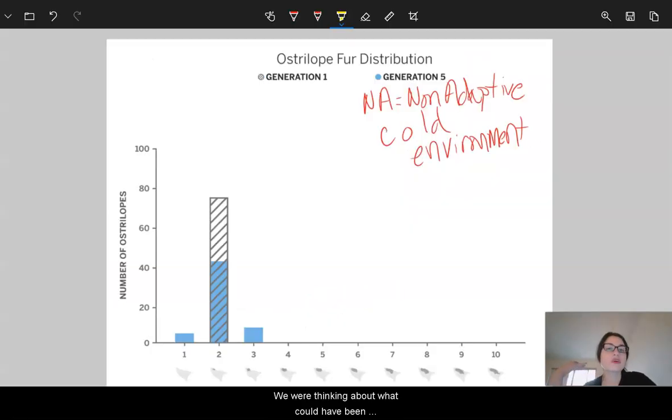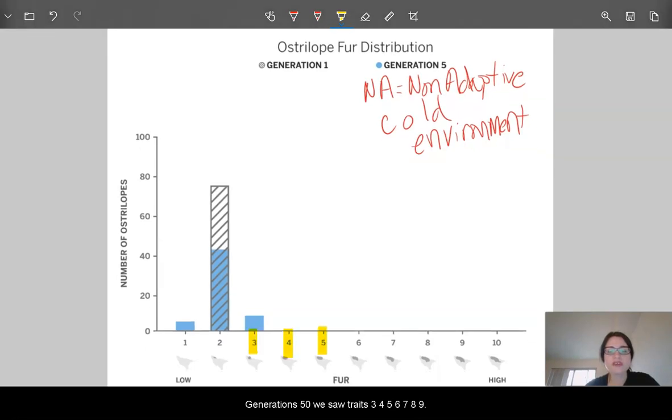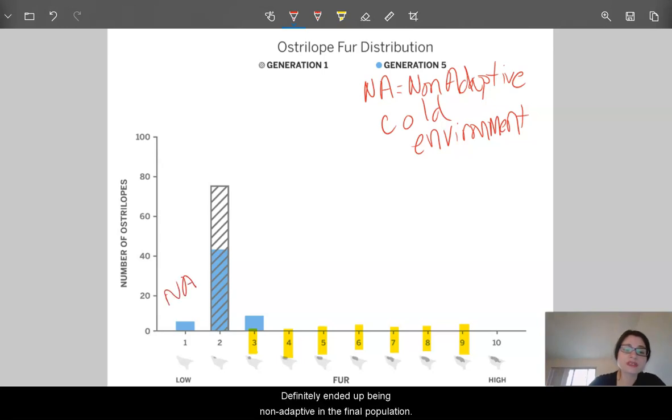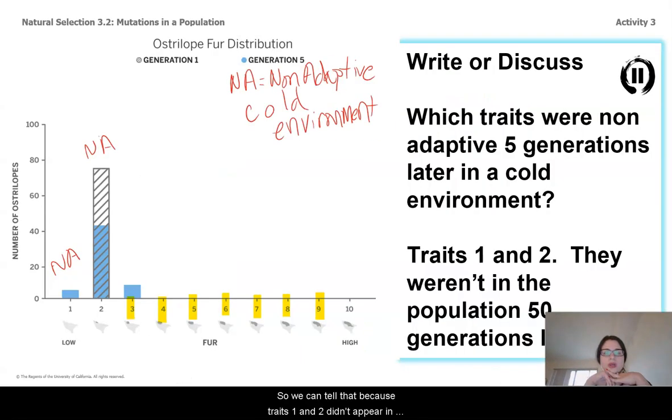So, when we're thinking about what could have been non-adaptive at Generation 5, let's use what we knew from Generation 50. From Generation 50, we saw traits 3, 4, 5, 6, 7, 8, and 9 all appear in the population. What we didn't see exist was traits 1 and 2. That would mean that traits 1 and 2 here definitely ended up being non-adaptive in the final population. So, we can tell that because traits 1 and 2 didn't appear in the end, they definitely were non-adaptive, but it's interesting that they were there in the first place. And we know when we see a new trait happening, like traits 1 and 3 here, it must have been a mutation.